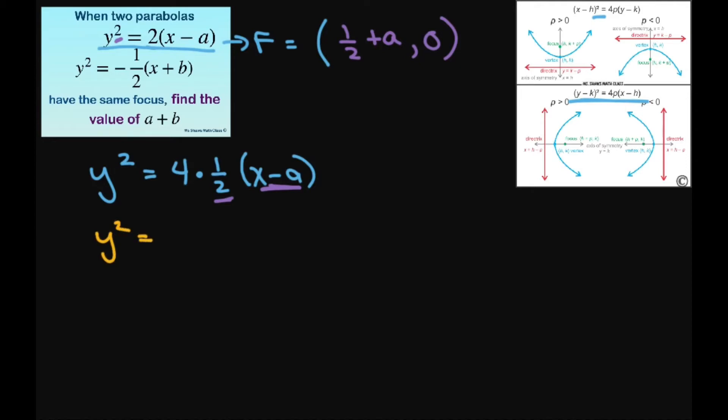Now for the second one, do the same thing. We have y squared equals four times negative one-eighth times x plus b. So to get a negative one-half, this has to be negative one-eighth.